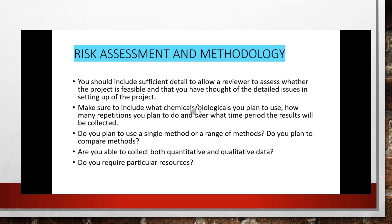Your method should include sufficient detail to allow a reviewer to assess whether the project you are proposing is feasible and that you have thought through the detailed issues in setting up the project. Make sure to include what chemicals or biological materials you plan to use, how many repetitions you plan to do, over what time period results will be collected, whether you plan to use a single method or a range of methods, and whether you plan to compare methods.